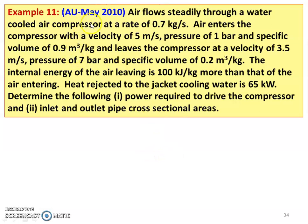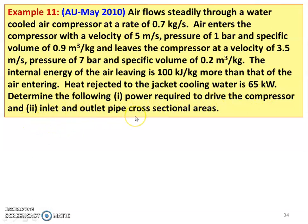Example number 11, from May 2010 examination. Air flows steadily through a water-cooled air compressor at a rate of 0.7 kilogram per second. The air enters the compressor with a velocity of 5 meters per second, pressure 1 bar, and specific volume 0.9 meter cube per kilogram, and leaves the compressor at a velocity of 3.5 meters per second, pressure 7 bar, specific volume 0.2 meter cube per kilogram. The internal energy of the air leaving is 100 kilojoules per kilogram more than that of air entry. Heat rejected to the jacket of cooling water is 65 kilowatts. Determine the power required to drive the compressor and inlet and outlet pipe cross-sectional areas.